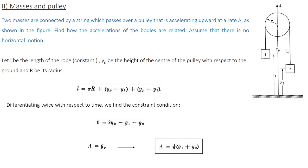I have one pulley and there is a rope passing through it; on either side of the rope two objects are attached — object one and two. We need to find how the accelerations of the bodies are related, assuming there is no horizontal motion. Also imagine that the pulley itself is moving upward with an acceleration a. First we need to find out which parameter is constrained here. The rope is attached to two objects and moves through the pulley. Throughout the motion, the length of the rope is constant, so we can write a constraint equation with respect to the length of the rope.